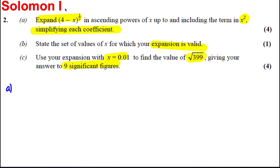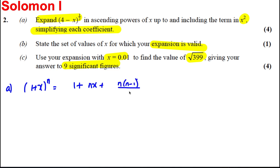Let's start with part a. We're going to use the binomial theorem, which we always write down: (1 + x)^n equals 1 plus nx plus n(n−1) over 2 times x squared. We only want to go up to x squared here, so we'll just write it like that.